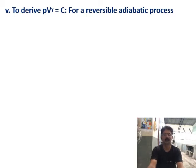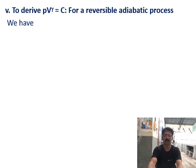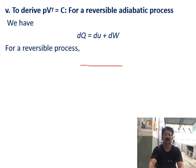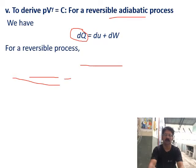Now let us derive PV to the power of gamma equals constant for a reversible adiabatic process using the first law. We have the first law expression: DQ equals DU plus DW. For a reversible process, DW equals PDV. So DQ equals DU plus PDV. For a reversible adiabatic process, DQ equals zero, so DU plus PDV equals zero.